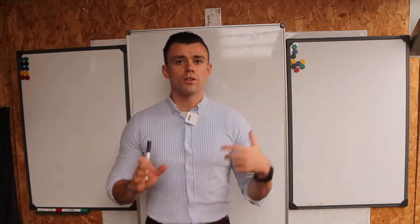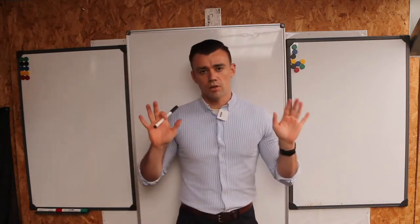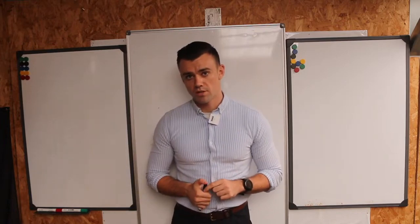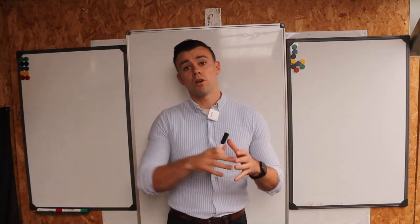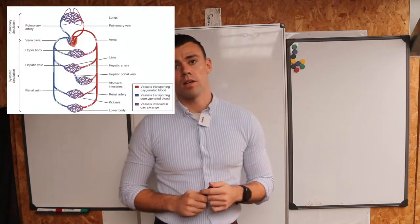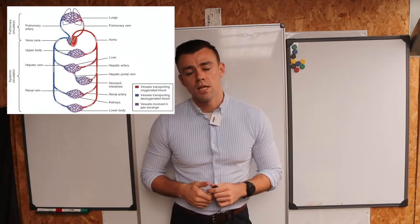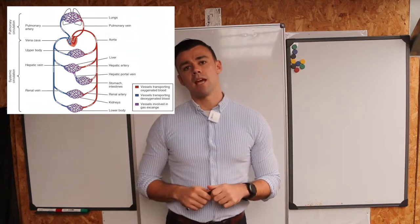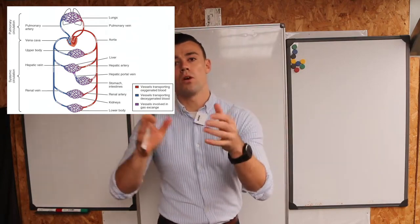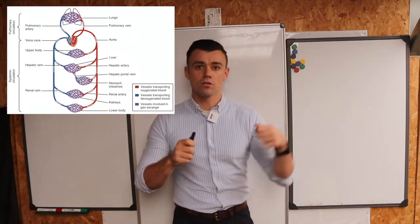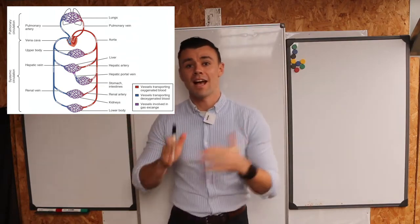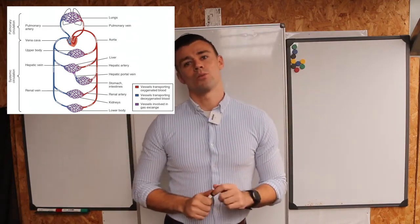First things first, it's important to take a step back and understand that the heart obviously has a very important role in exercise. One of its most important roles is the ability to deliver blood quickly and promptly at high volumes around the body so as to maintain oxygenation in working muscles and related organs. It also plays the important role of delivering deoxygenated blood with its waste products such as carbon dioxide to the lungs so that it can be reoxygenated.